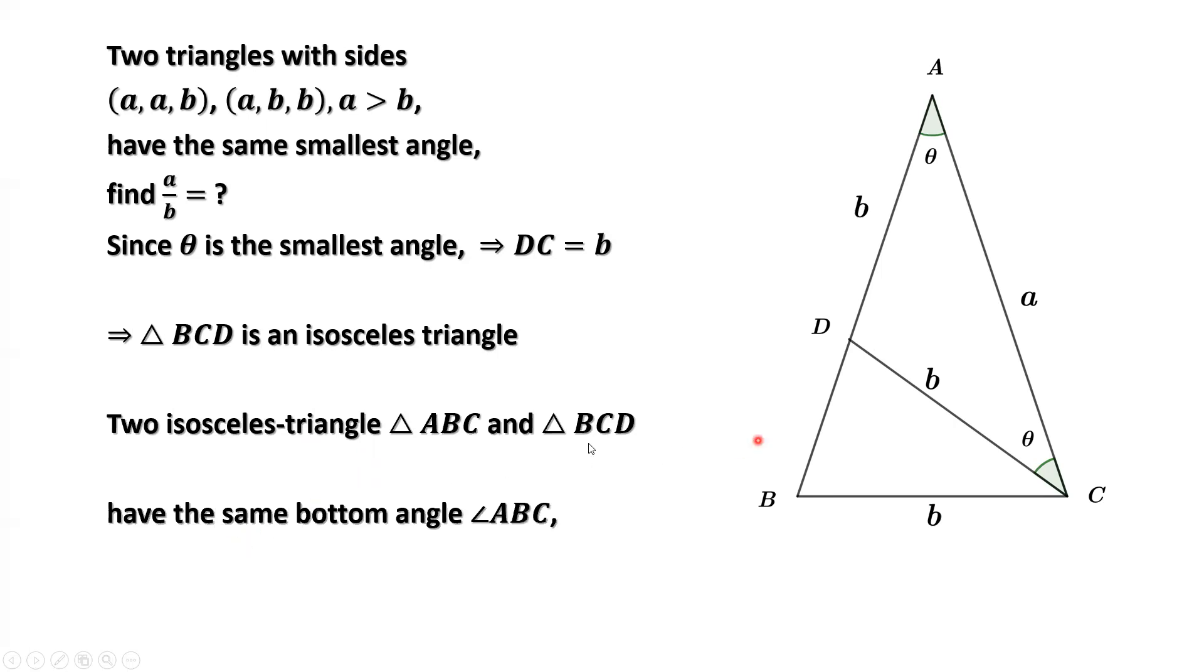We have two isosceles triangles, and both triangles are sharing the same bottom angle. This angle. This angle is on both triangles, the bottom angle. Let's mark it. This angle theta. In this small triangle and in this big triangle, they are sharing it.